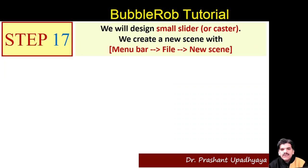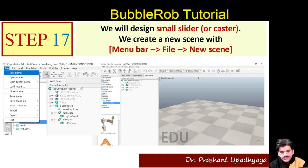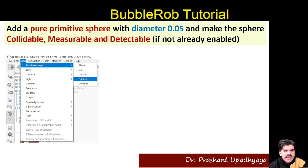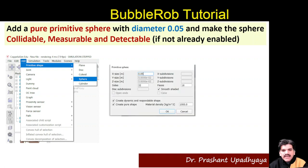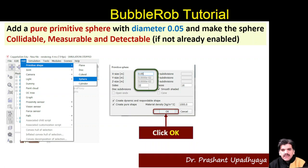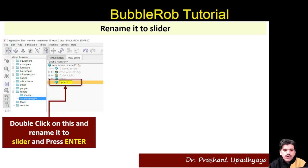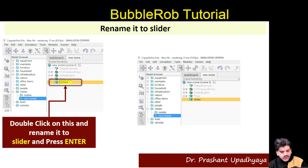First we will design a small caster slider in a new scene. We go to File > New Scene, then Add > Primitive Shape > Sphere, and give it a diameter of 0.05. We also need to make the sphere collidable, measurable, and detectable, and then rename it to 'slider'.